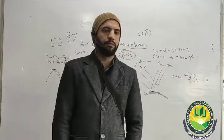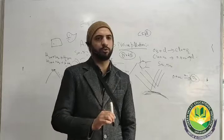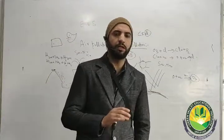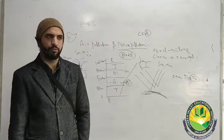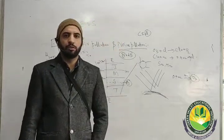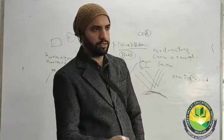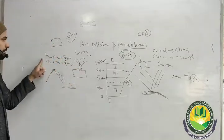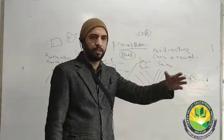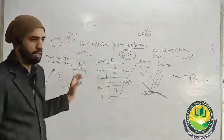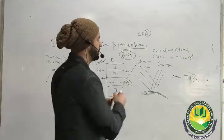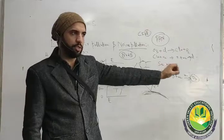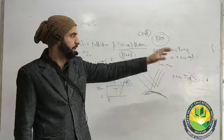Now talking about pollutants — a pollutant is a substance that causes pollution. Pollutants exist in three forms: solid, liquid, and gas. We also classify pollutants as primary and secondary. Primary pollutants are those directly caused by industry and other sources entering the atmosphere. Secondary pollutants are formed by reactions in the atmosphere — for example, PAN (peroxyacetyl nitrate), which forms smog, is a secondary pollutant formed with the help of a catalyst.